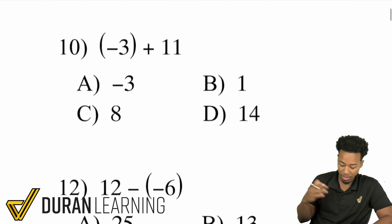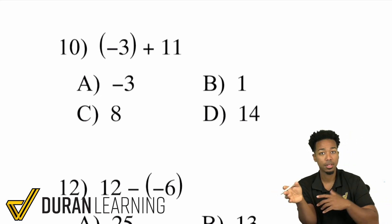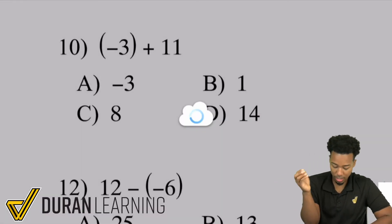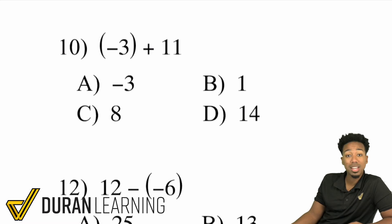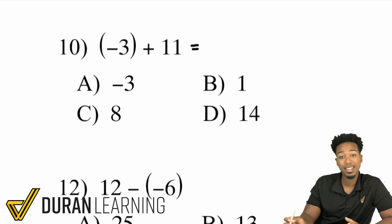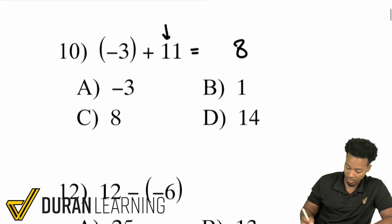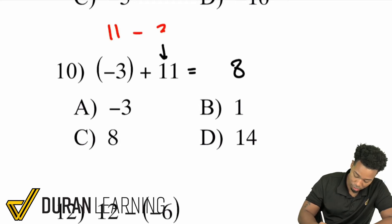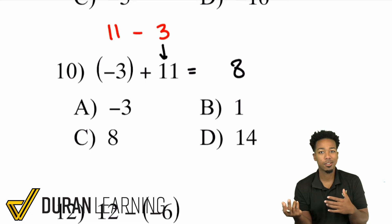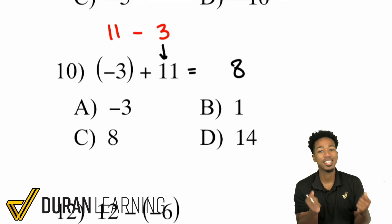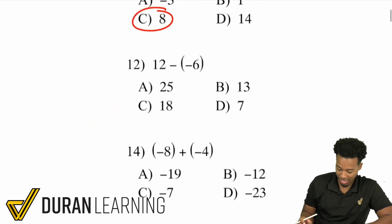Number 10: negative 3 plus 11. Two ways to look at this: you have a negative plus a positive with opposite signs, so subtract and keep the sign of the bigger number. The difference is 8, and since 11 is bigger, the answer is positive 8. Or you can switch it: negative 3 plus 11 is the same as 11 plus negative 3, which is 11 minus 3, and that is 8. This is a lot of fun once you know the rules.